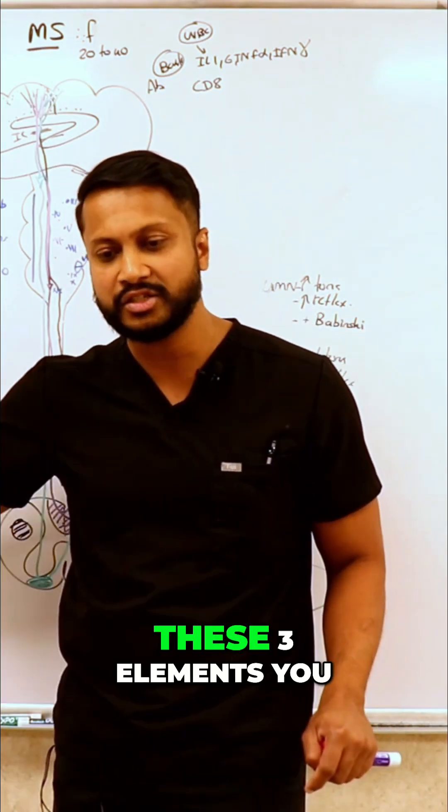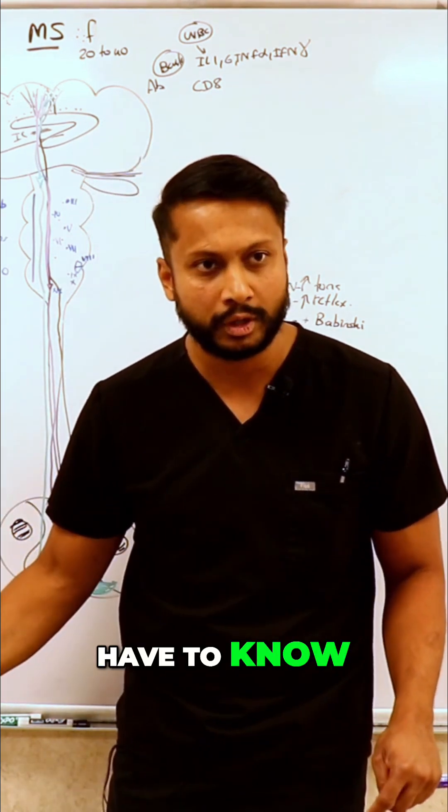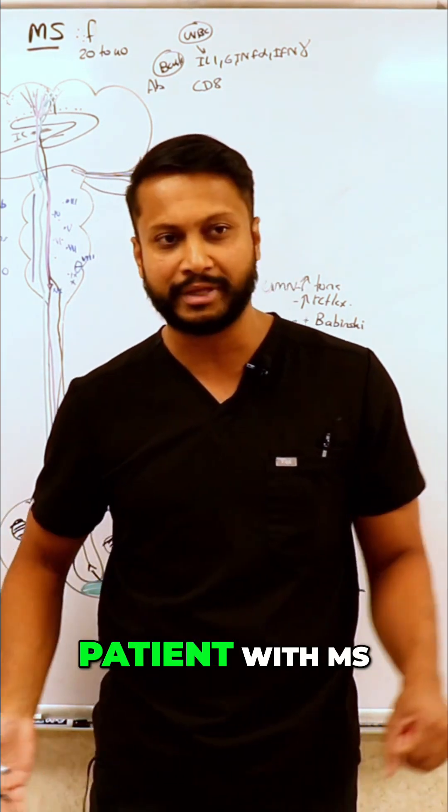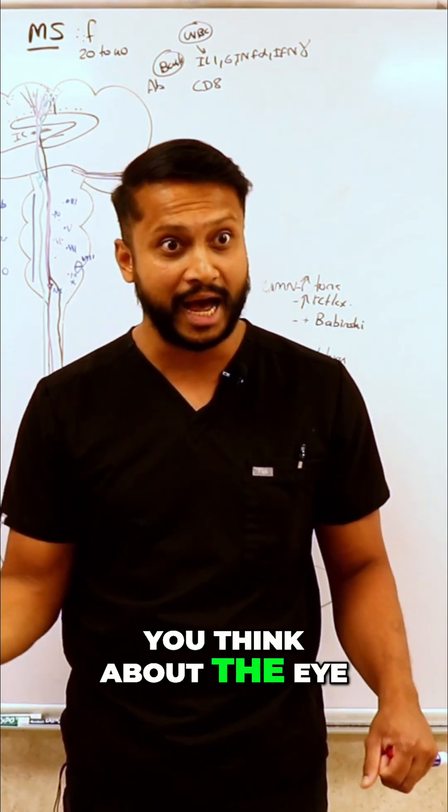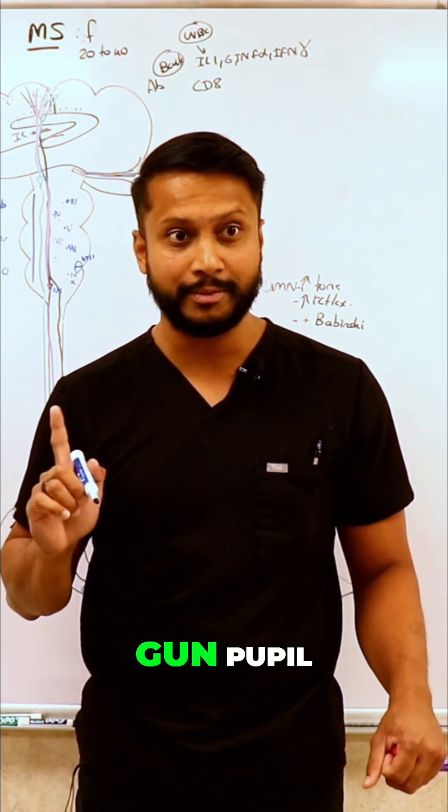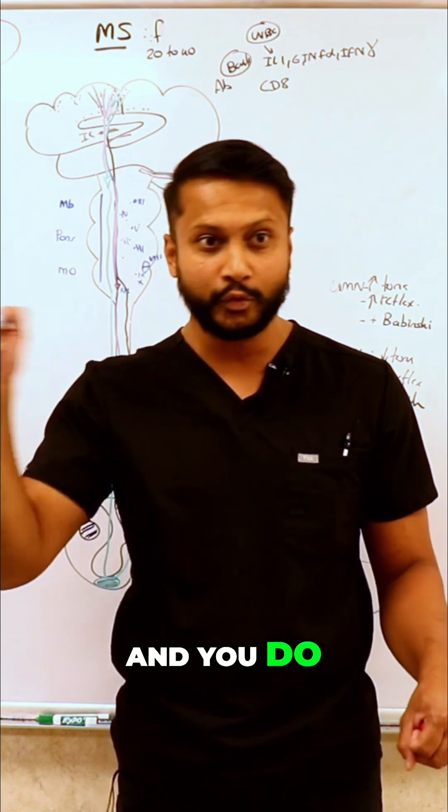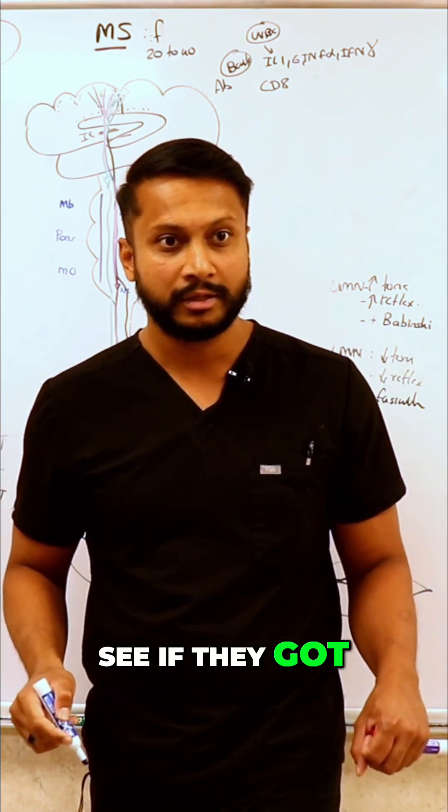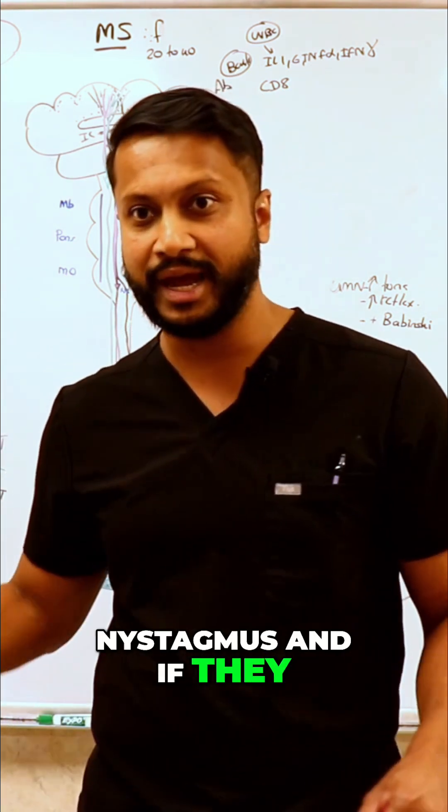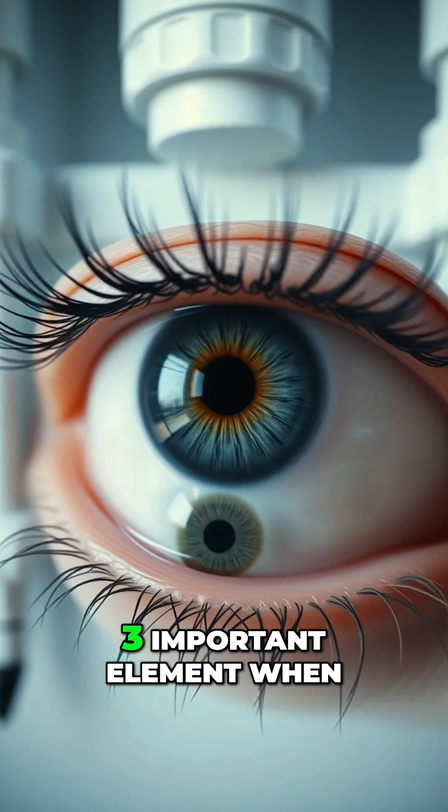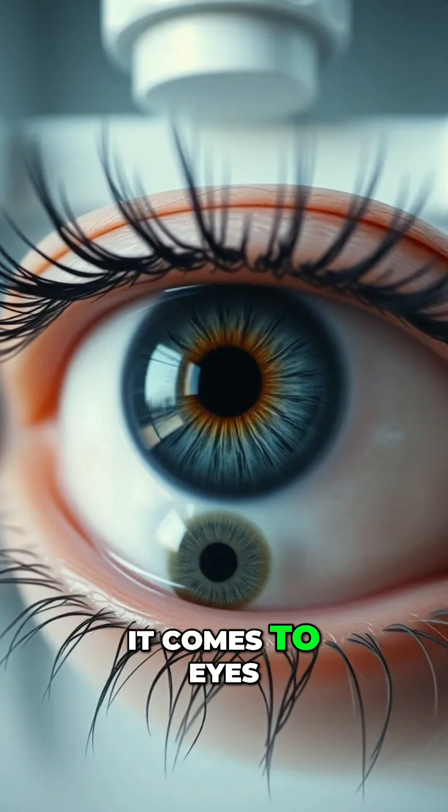When it comes to the eyes, these three elements you have to know. From now on, whenever you see a patient with MS, you think about the eye. You do your Marcus Gunn pupil—take them into a dark room and shine the light. You check their gaze and see if they've got nystagmus and if they have INO. Those are the three important elements when it comes to eyes.